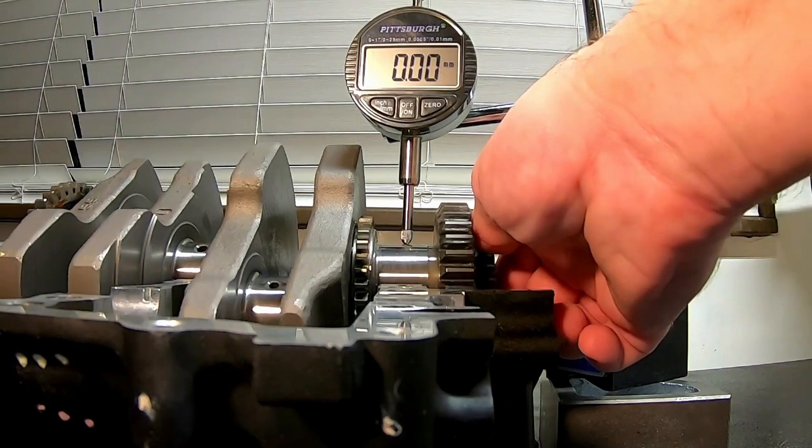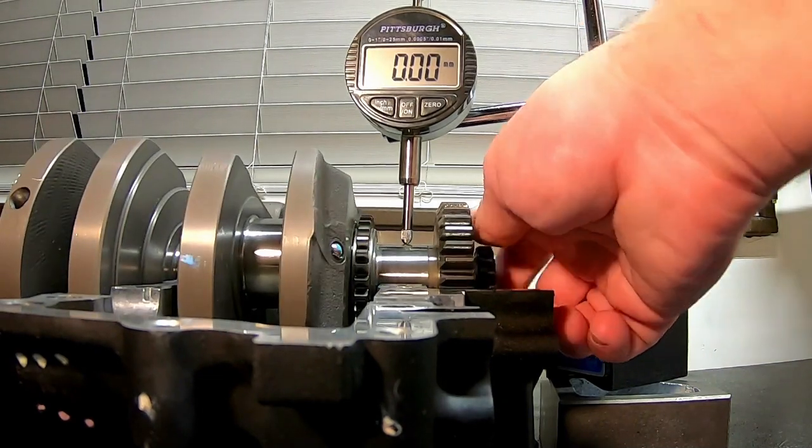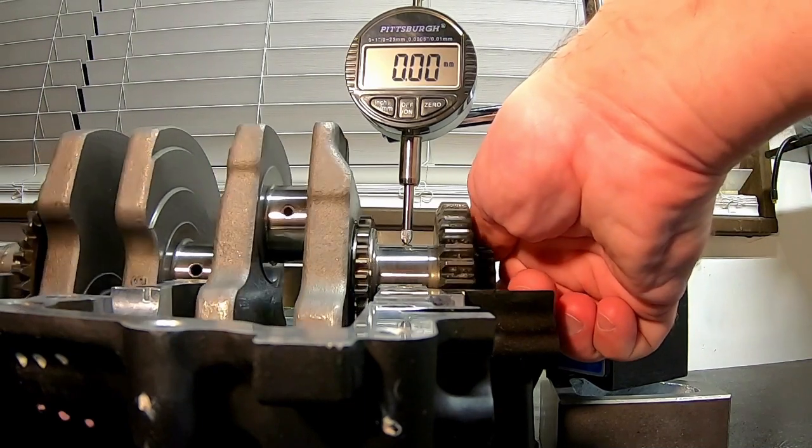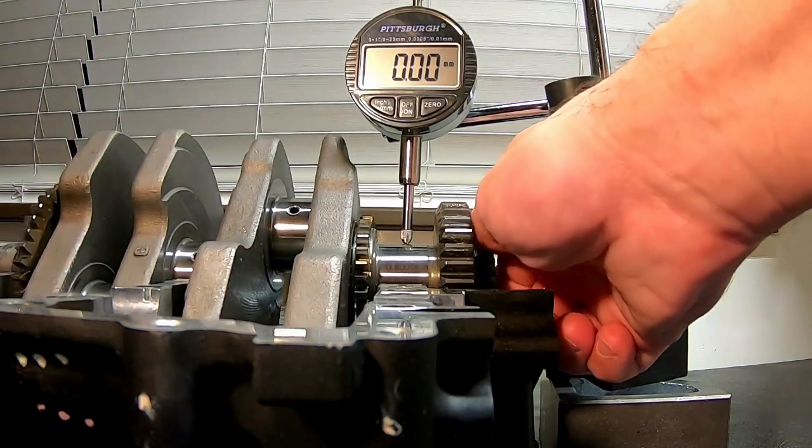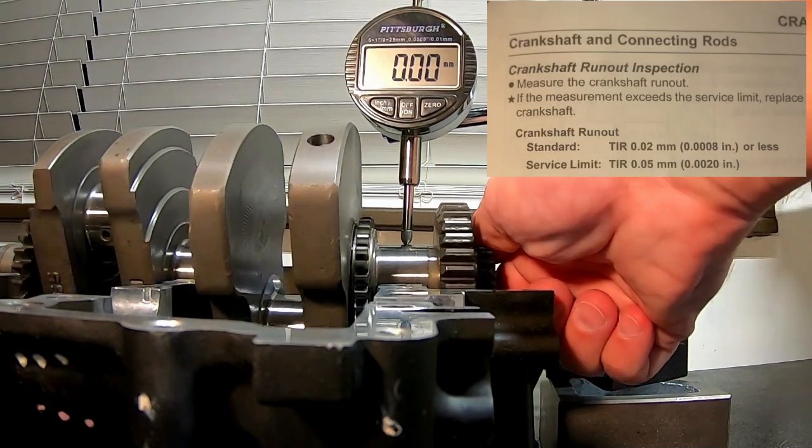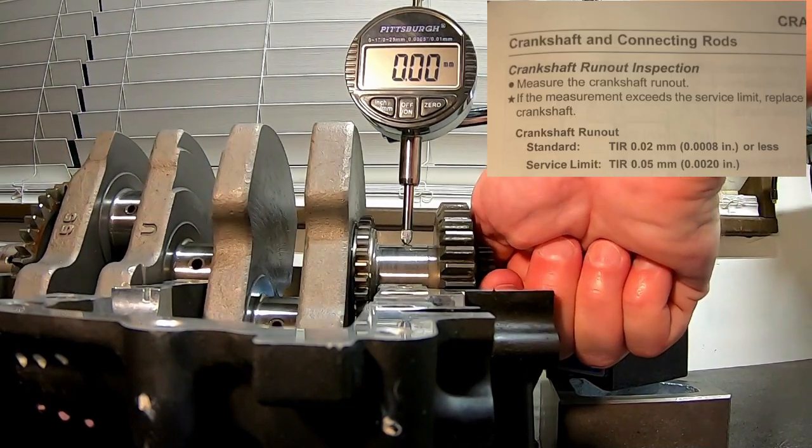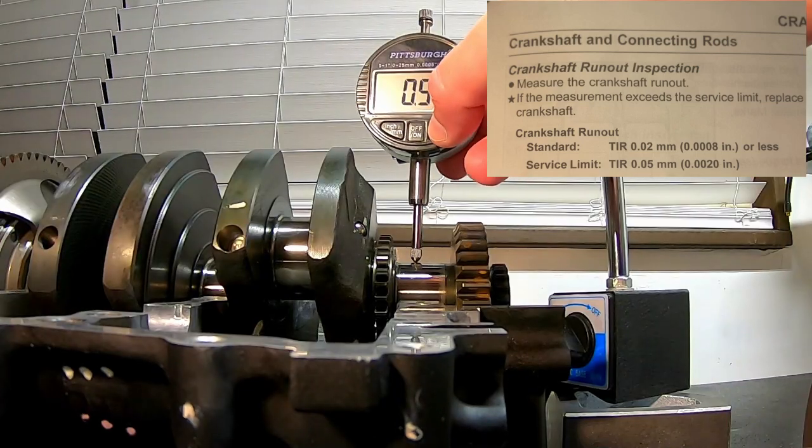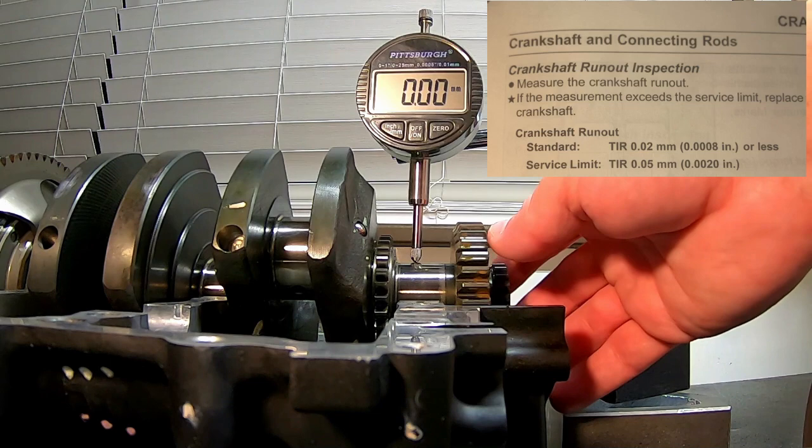Never goes over that, so our total indicator runout is 0.01 millimeters—that was the variance. Now if you look in the upper right of your screen, you'll see the service manual that says standard runout is 0.02 millimeters or less. We have 0.01, so we're good. Service limit is 0.05.